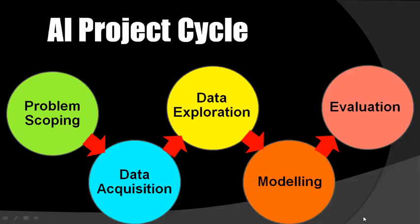Stage one is problem scoping. Then stage two is data acquisition, next is data exploration, then modeling, and finally evaluation. These are the five steps of the AI project cycle. Starting with problem scoping, you set the goal for your AI project by stating the problem which you wish to solve. Under problem scoping, we look at various parameters which affect the problem we wish to solve, so that the picture becomes clearer.